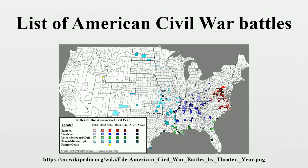The Battles of the American Civil War were fought between April 12, 1861 and May 12-13, 1865, in 23 states and the District of Columbia, as well as the following territories and naval engagements.